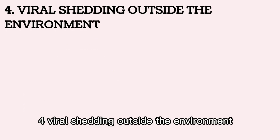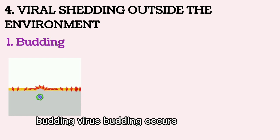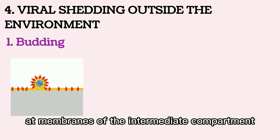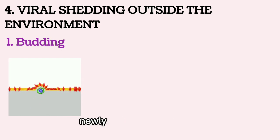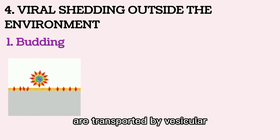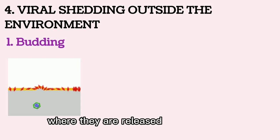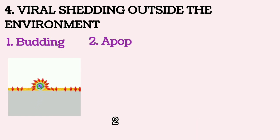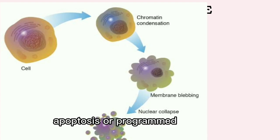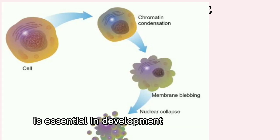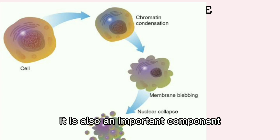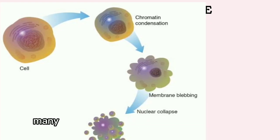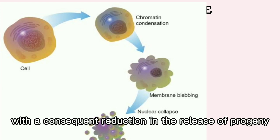Viral shedding outside the environment: 1. Budding — virus budding occurs intracellularly at membranes of the intermediate compartment between the endoplasmic reticulum (ER) and the Golgi complex. Newly assembled virions are transported by vesicular transport to the cell surface, where they are released via exocytosis. 2. Apoptosis — apoptosis, or programmed cell death, is essential in development and homeostasis in multicellular organisms. It is also an important component of the cellular response to injury. Many cells undergo apoptosis in response to viral infection, with a consequent reduction in the release of progeny virus.